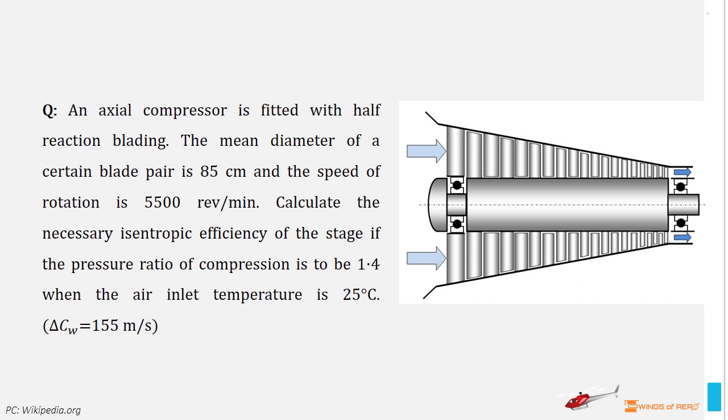The mean diameter of a certain blade pair is 85 cm and the speed of rotation is 5500 rpm. Calculate the necessary isentropic efficiency of the stage if the pressure ratio of compression is to be 1.4 when the air inlet temperature is 25 degree Celsius.